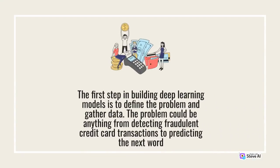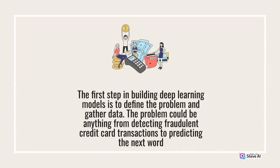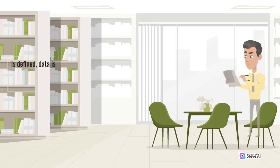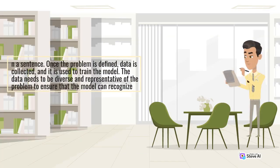The first step in building Deep Learning models is to define the problem and gather data. The problem could be anything from detecting fraudulent credit card transactions to predicting the next word in a sentence. Once the problem is defined, data is collected, and it is used to train the model. The data needs to be diverse and representative of the problem to ensure that the model can recognize patterns effectively.